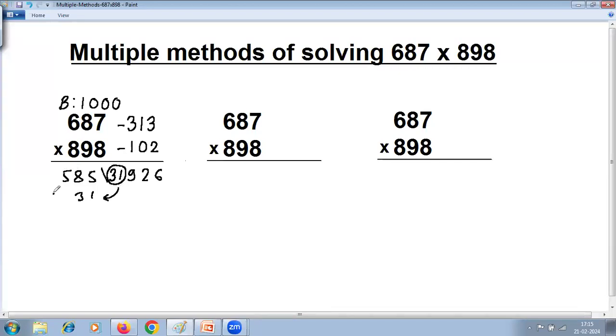Then add this extra part to the left: 31. So plus 31. 5 plus 1 is 6. Left hand side answer is 6, 1, 6. Right hand side is 9, 2, 6. Join: 616,926. So we have used Base method of multiplication below base.